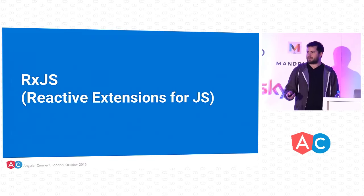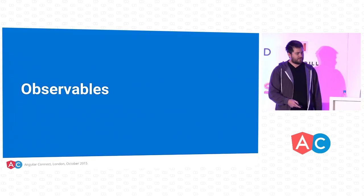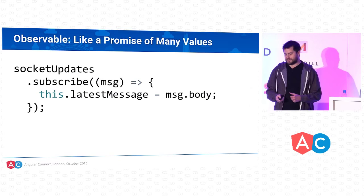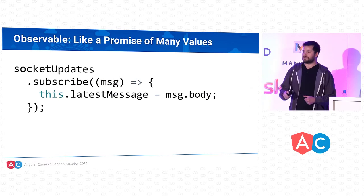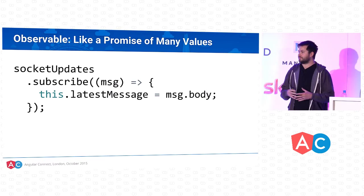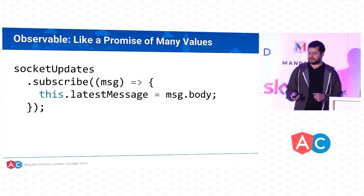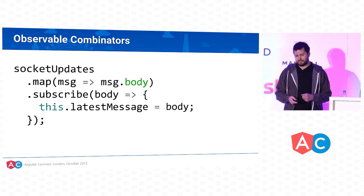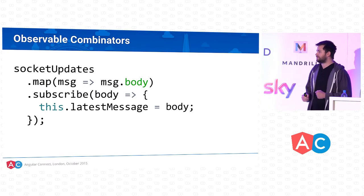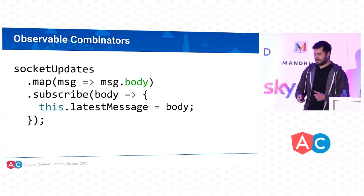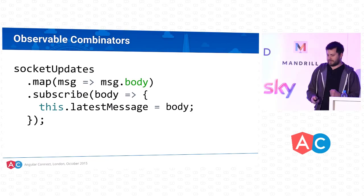We're going to talk about the RxJS library we're using in Angular 2. RxJS is an observables implementation. An observable is kind of like a promise, except it can accept many values over time. With a promise you call .then and it gets called once. With an observable, the function can be called many times and it's called subscribe. It's also like an array in that you can add combinators like map to process and return updated data.